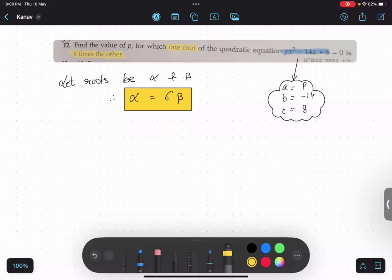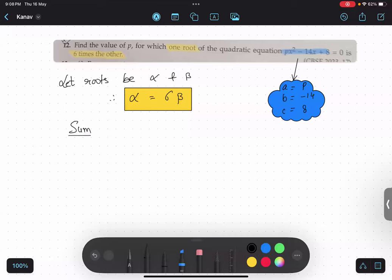So we are going to calculate sum and product. Sum is what? Sum of zeros. Alpha plus beta equals to minus b by a.